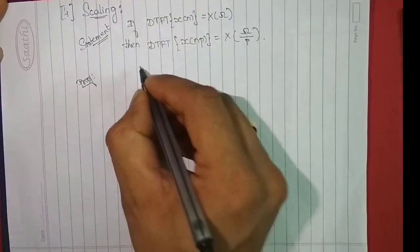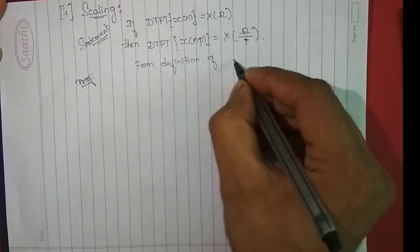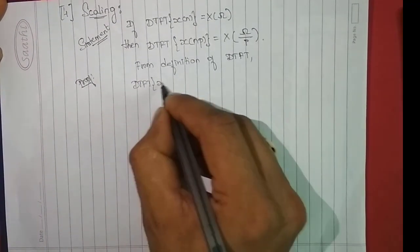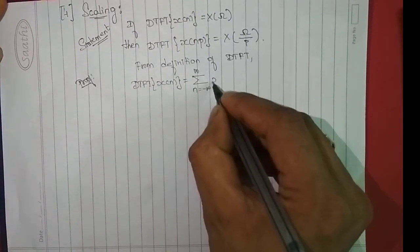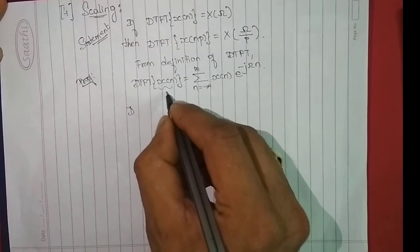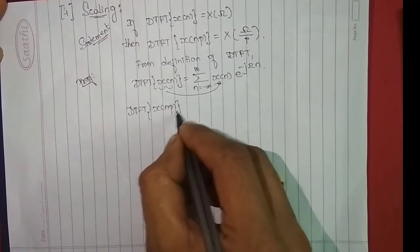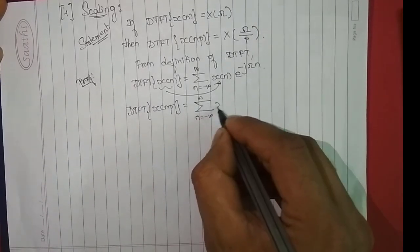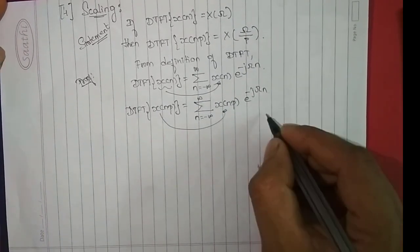Proof: again from the definition of DTFT, we have DTFT of x of n is equal to summation n varying from minus infinity to infinity of x of n, e power minus j omega n. What we need to prove is DTFT of x of n into p is equal to summation n varying from minus infinity to infinity of x of n into p, e power minus j omega n.